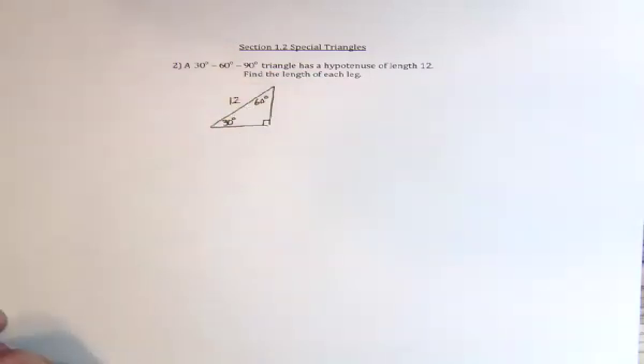The hypotenuse is across from the 90 degree angle, it's also the longest side, is 12. And now we need to solve for the two other sides, also called legs.